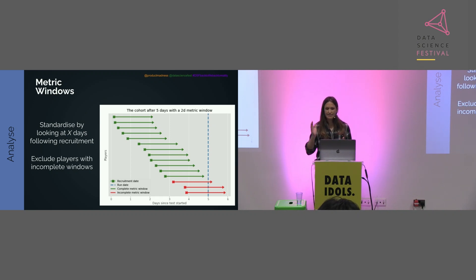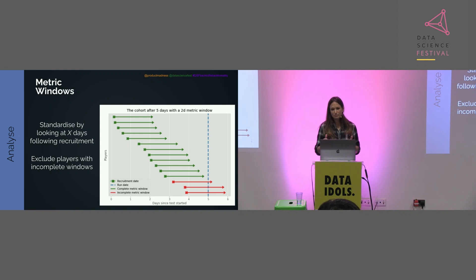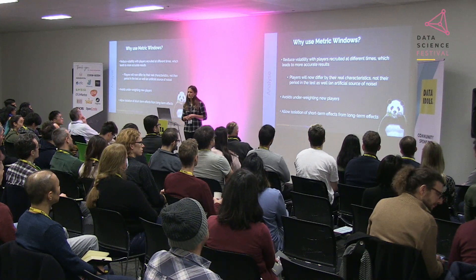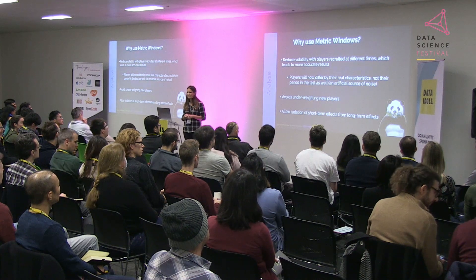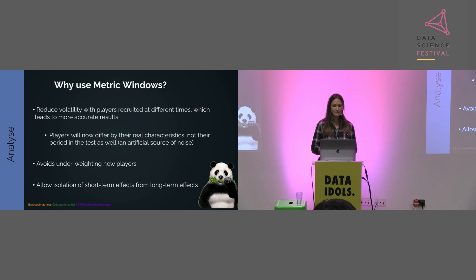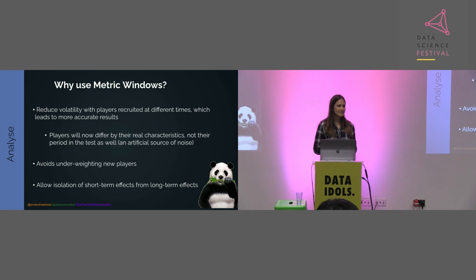We use metric windows because they reduce volatility with players recruited at different times, leading to more accurate results. Players now differ by their actual real characteristics rather than the period of time they've been in the test. We also avoid underweighting new players who entered at a later date, and we can isolate short-term versus long-term effects.